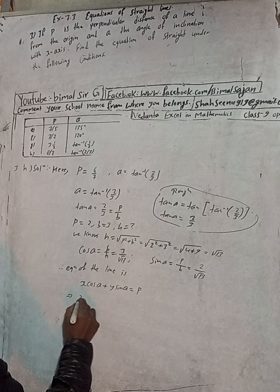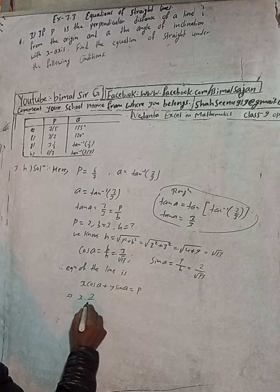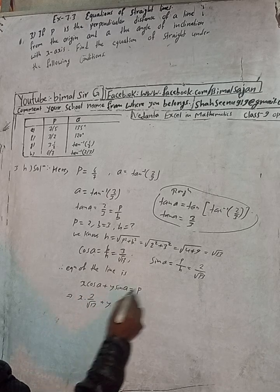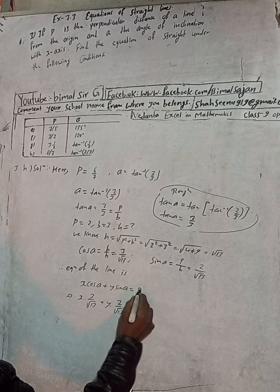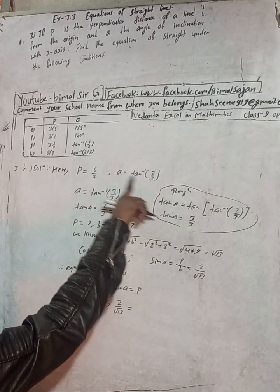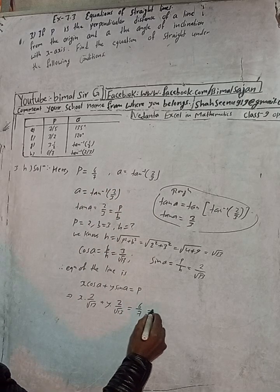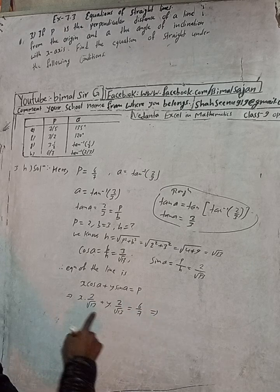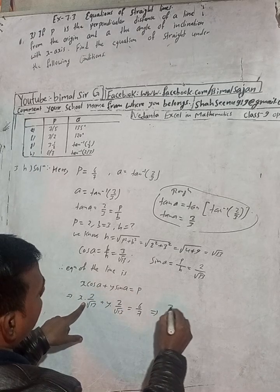This implies x and cos alpha is here 3 by root 13 plus y sin alpha is 2 by root 13, is equal to p. What is p here? P is 6 by 7.